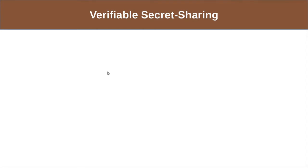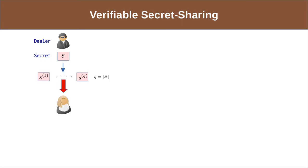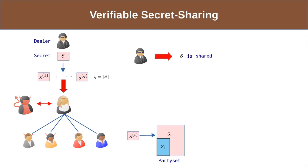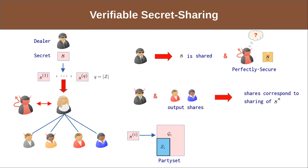Our MPC protocol uses a verifiable secret sharing protocol equivalent to the following ideal functionality. There is a designated dealer D who has a private input S. The trusted third party waits to receive Q shares from the dealer — where Q is the size of the adversary structure — and sends the i-th share to all parties except those in the i-th set of the adversary structure. If the dealer is honest, the value S is shared according to the specified scheme and remains perfectly secure. If the dealer is malicious and honest parties output shares, these shares correspond to a sharing of some value S* held by the dealer.